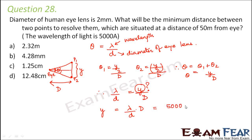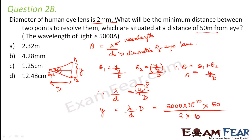Substituting: λ = 5000 Å = 5000 × 10⁻¹⁰ m, D = 50 m, and d = 2 mm = 2 × 10⁻³ m. So y = (5000 × 10⁻¹⁰ × 50) / (2 × 10⁻³) = 1.25 cm. Option C is the correct answer.